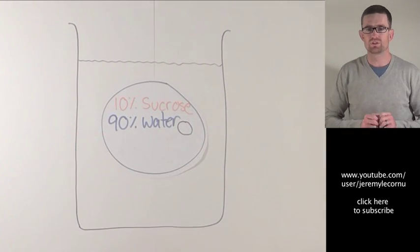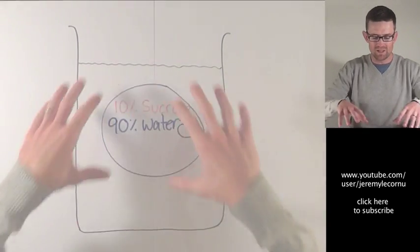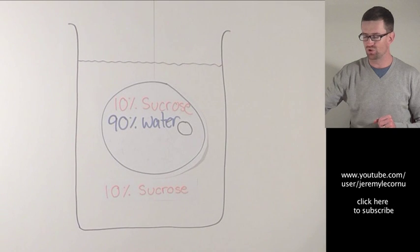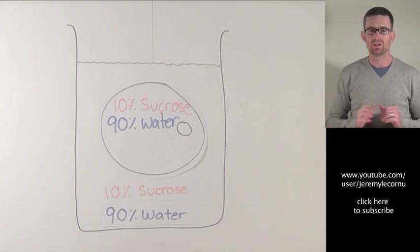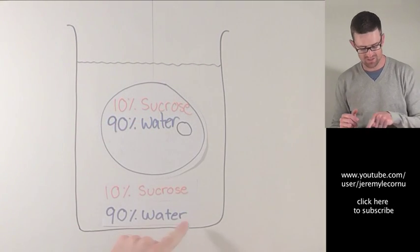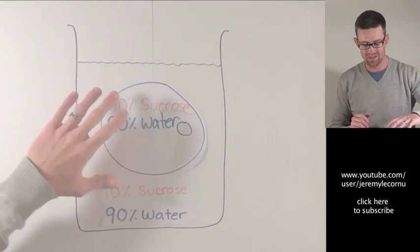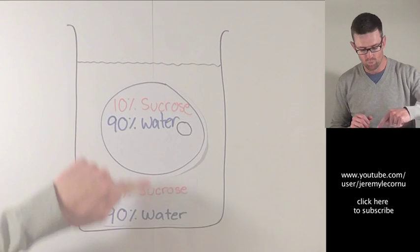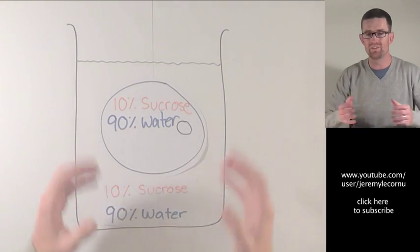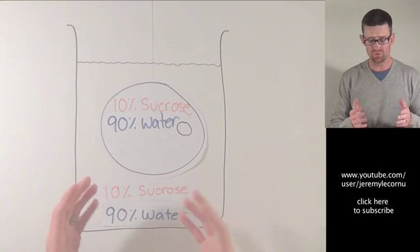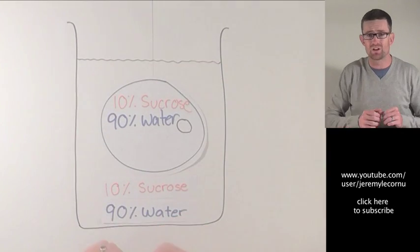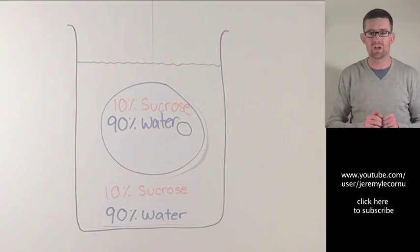10 percent sucrose, 90 percent water inside of that cell, and we've placed that cell into a beaker. Now, if that beaker were to contain a solution that was also 10 percent sucrose and 90 percent water, then we're going to have osmosis occurring. But as the water concentration is the same inside of the cell as it is outside of the cell - there's no more watery or less watery area - water will be moving in and moving out at the same rate, so there will be no net gain or loss of water and the cell will remain exactly the same. That's good. That's what this cell wants because the osmotic pressure and the water levels inside of that cell is really important for maintaining that cell's shape and structure.